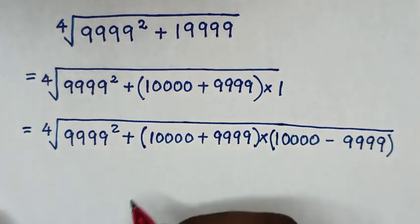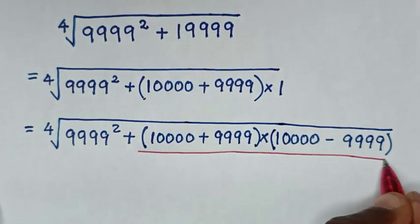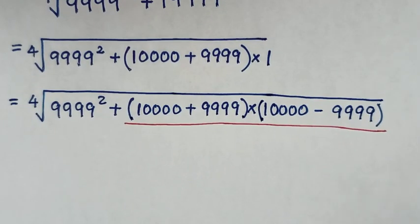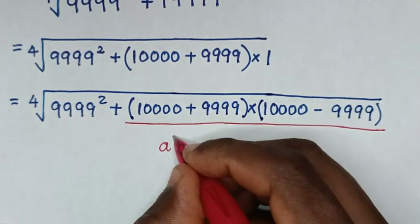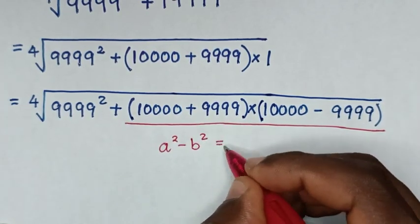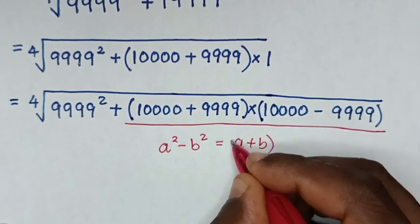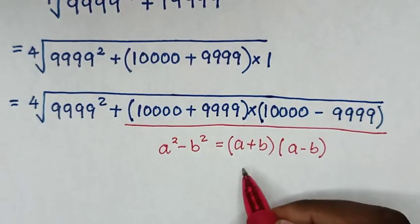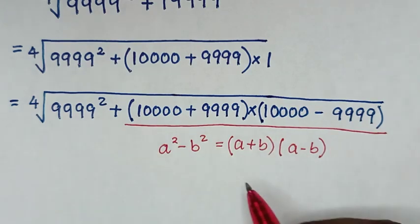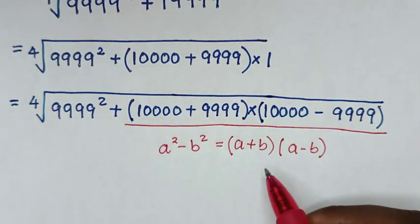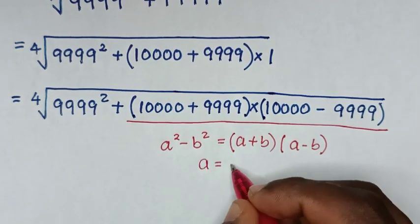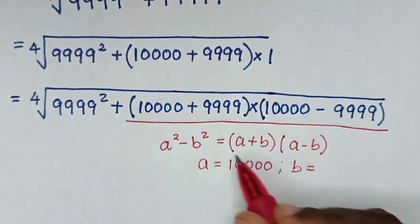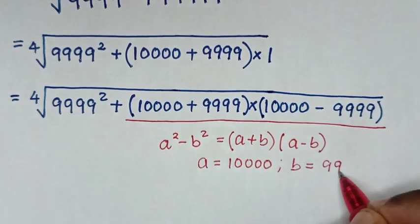The next step: this part is in the form of a perfect square, so we apply the perfect square rule, which is a squared minus b squared equals (a plus b)(a minus b). Comparing, we see a is equal to 10,000 and b is equal to 9,999.